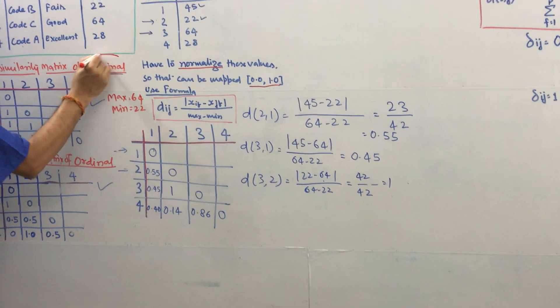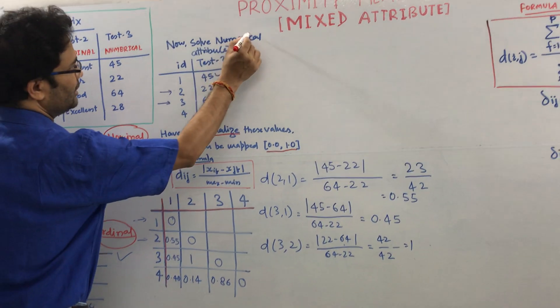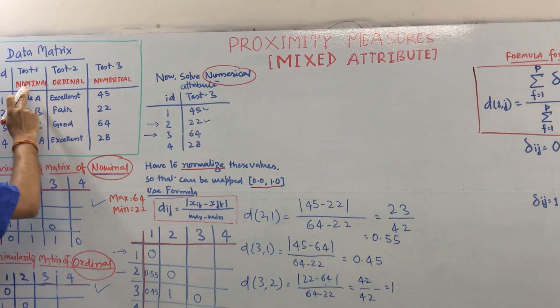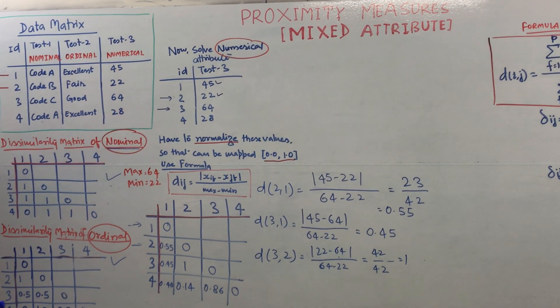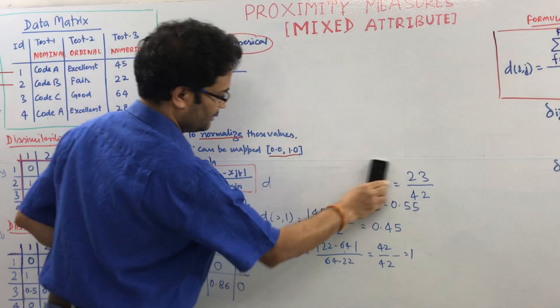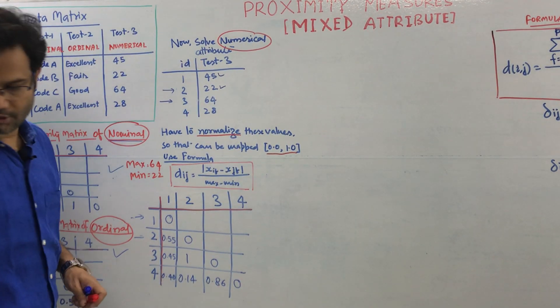We have the nominal, we have the ordinal, and we have the numerical. Nominal, ordinal, numerical we calculated individually right. Now how to put all together? To put all together we have this formula here.